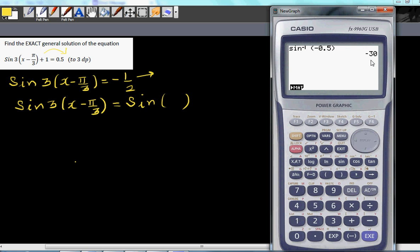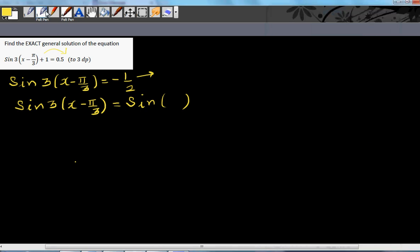And minus 30 is same as minus 30 pi over 180. That is minus 30 pi over 180, because if you want to change degrees into radians, I like to work in degrees and then change into radians. So this is sine of 3 x minus pi by 3 is equal to sine of negative pi by 6.